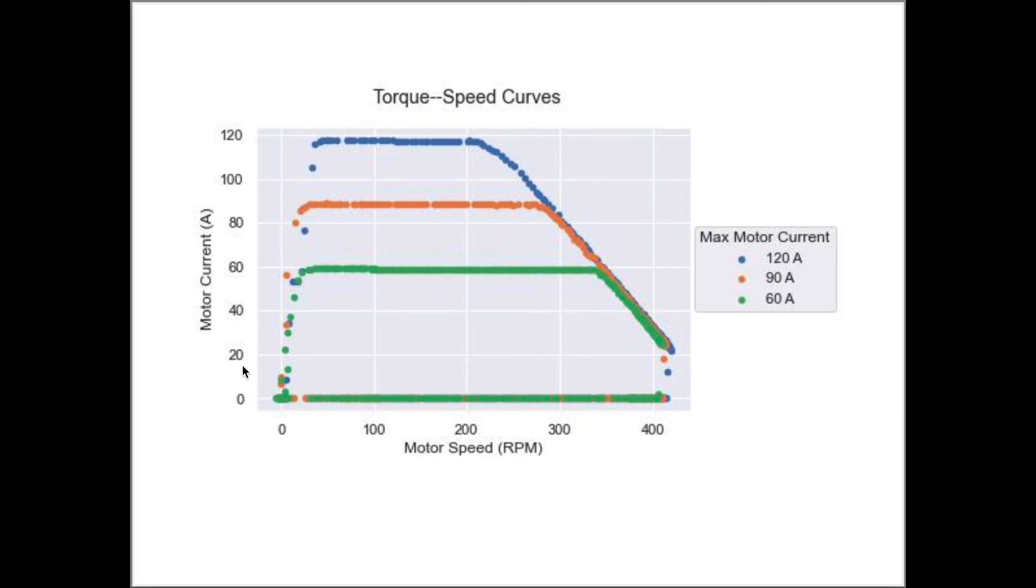For this hub motor, torque in newton meters is very close to the current in amps. This graph allows us to see the RPM at which the powertrain can no longer provide the maximum motor current and the torque and acceleration begins to drop.